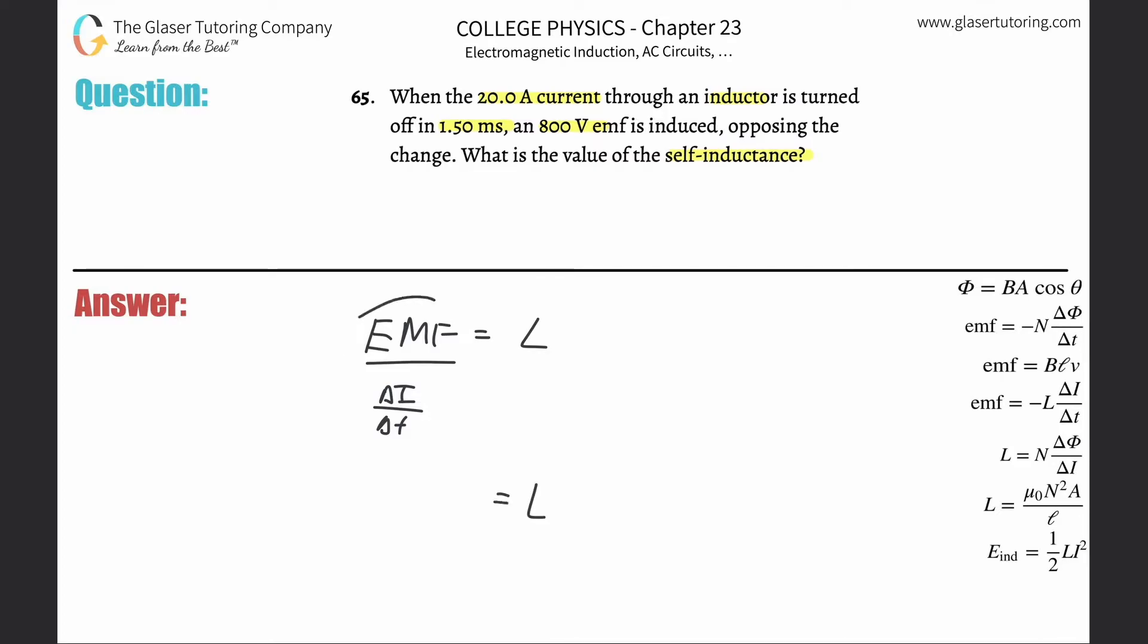The inductance equals the EMF that is induced, which is 800 volts, divided by the change in the current. If it started at 20 and was turned off, the change is 20, divided by the time it took to change that current. They told us it's turned off in 1.5 milliseconds, but we need 1.5 times 10 to the minus 3 seconds, not milliseconds.